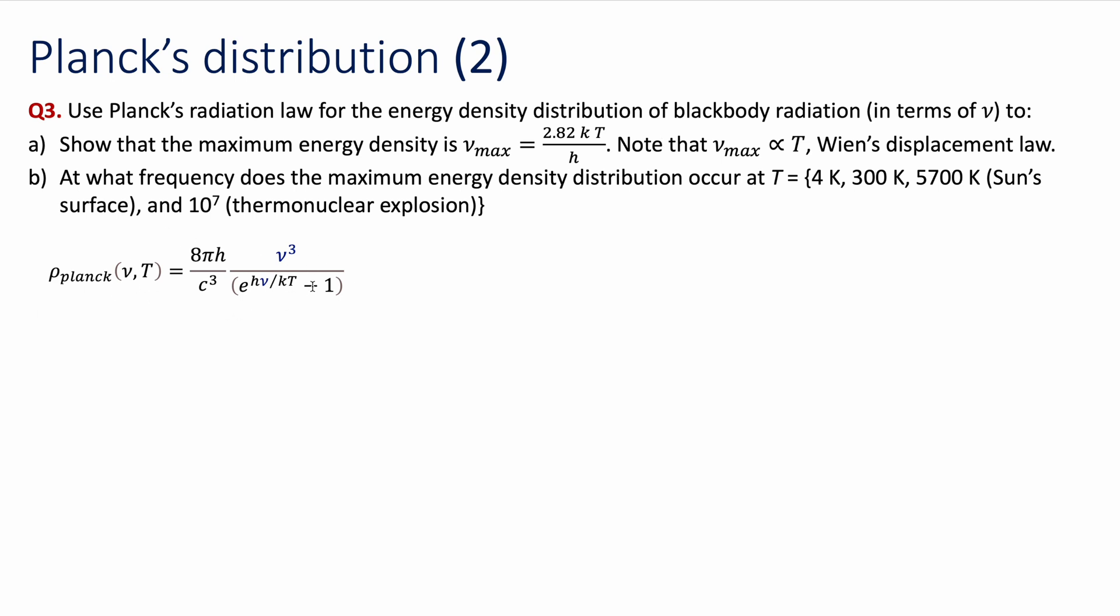Write down Planck's radiation law in terms of frequency first, then in order to find the maximum we have to take the derivative of this function and equal that to zero. Since we're going to be taking derivatives and I have this exponential, let's do a change of variable first in order to simplify the expressions a little bit.